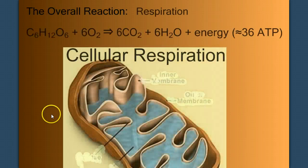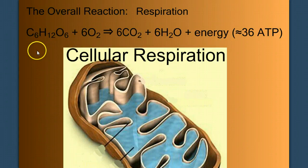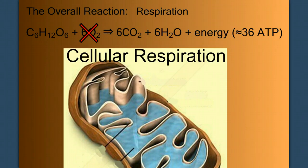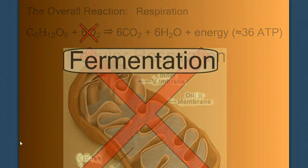Welcome back to our fourth video in our three-part series. Yeah, I know. This doesn't make much sense to me either. But we've been talking about cellular respiration, where we've been using our cellular fuel glucose and burning it in the presence of oxygen to generate ATP, approximately 36. But what happens in an anaerobic environment when we don't have oxygen? And what would a cell do if it lacked mitochondria, where most of respiration occurs? Well, the answer is fermentation.